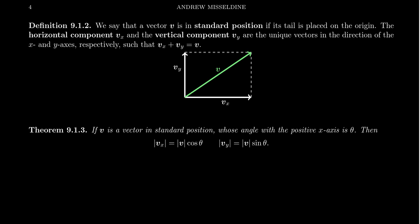Since the location of a vector in the plane doesn't change the vector quantity, we often talk about putting a vector in standard position. A vector in standard position means that we've placed the tail of the vector on the origin of our coordinate system. When a vector is in standard position, then it makes sense to talk about its components.